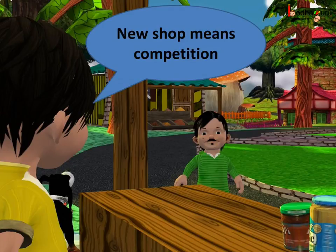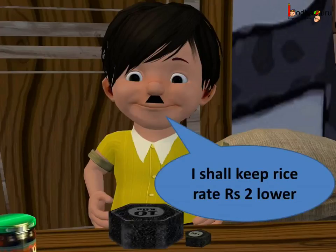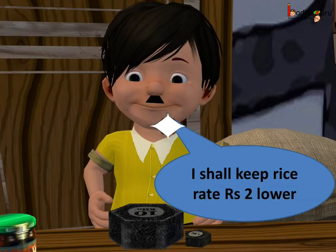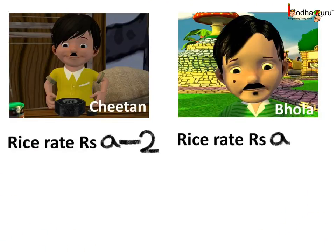Now let's take another example. Bola opened a new shop near Chetan's shop. Chetan decided to keep the rate of the rice rupees 2 lower than the rate of the rice at Bola shop. Suppose Chetan is selling the rice at Rs. 21 per kg. Then what should be the rate at Bola shop?